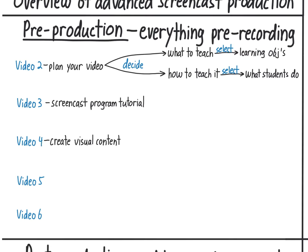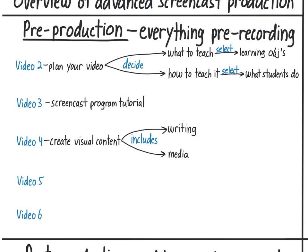In video 4, I'll show you how to create visual content for your video within the screencasting program. This includes all the writing — like the word 'writing' that just appeared. I choose handwriting over typed writing because students seem to lend more importance to something if it's handwritten by the teacher, and are more likely to write it themselves. Your visual content may also include media, which includes images like this one.